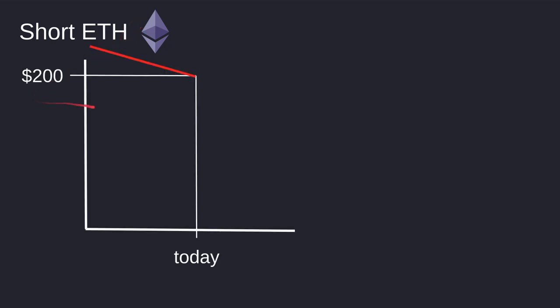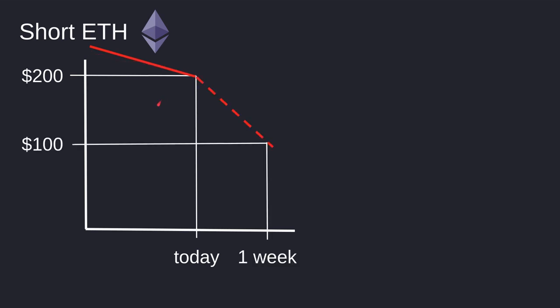What if we want to bet that the price of ETH is going down? This is called shorting ETH. Let's see how we can make a profit by betting that the price of ETH is going down. Let's say that the price of ETH today is 200, and over the last few weeks I noticed the price is going down. One week from now I predict it's going to keep going down to around 100. How would I make profit off of this prediction?